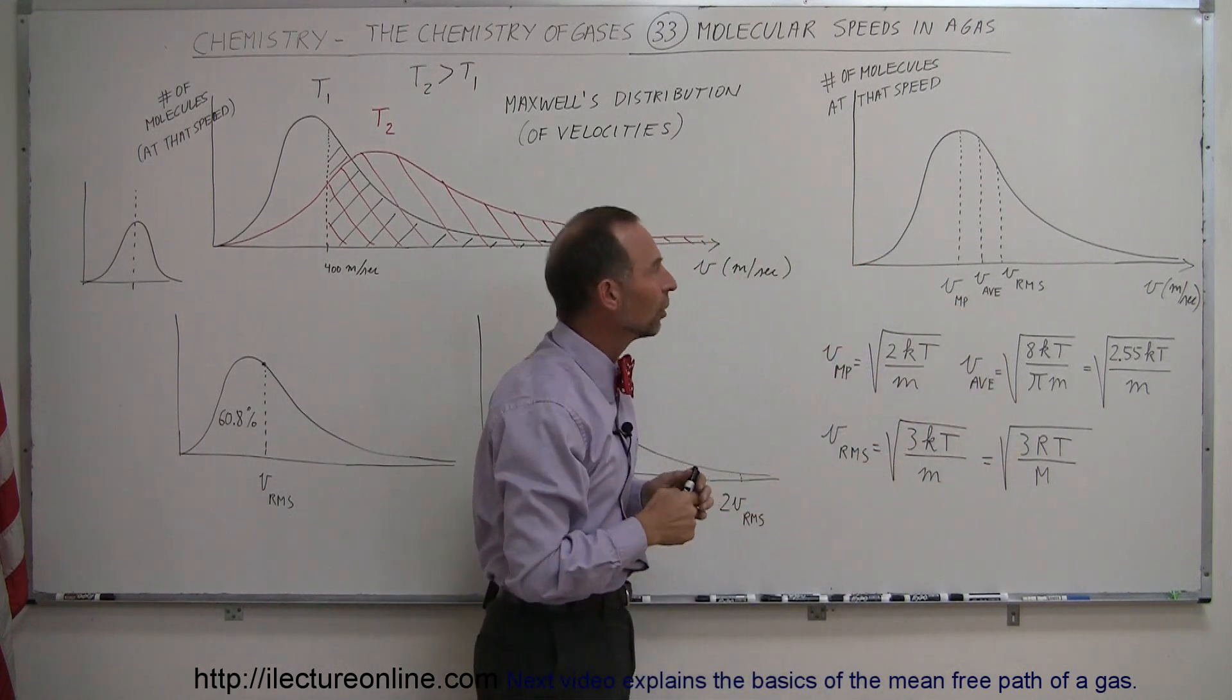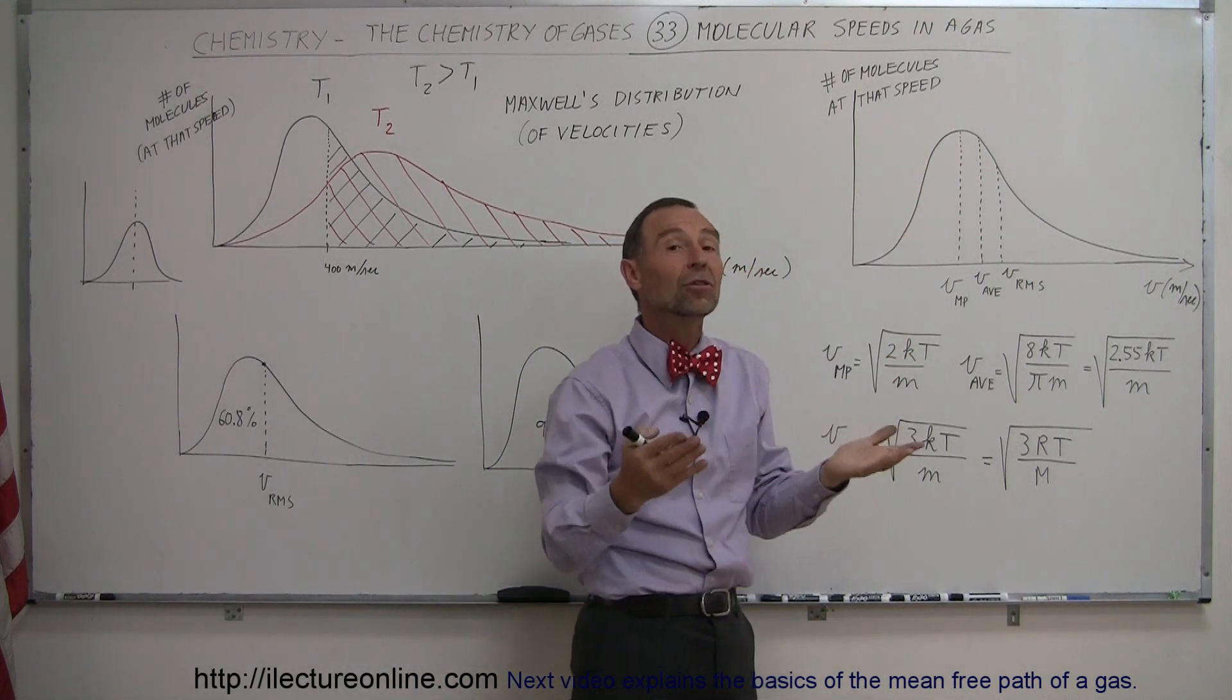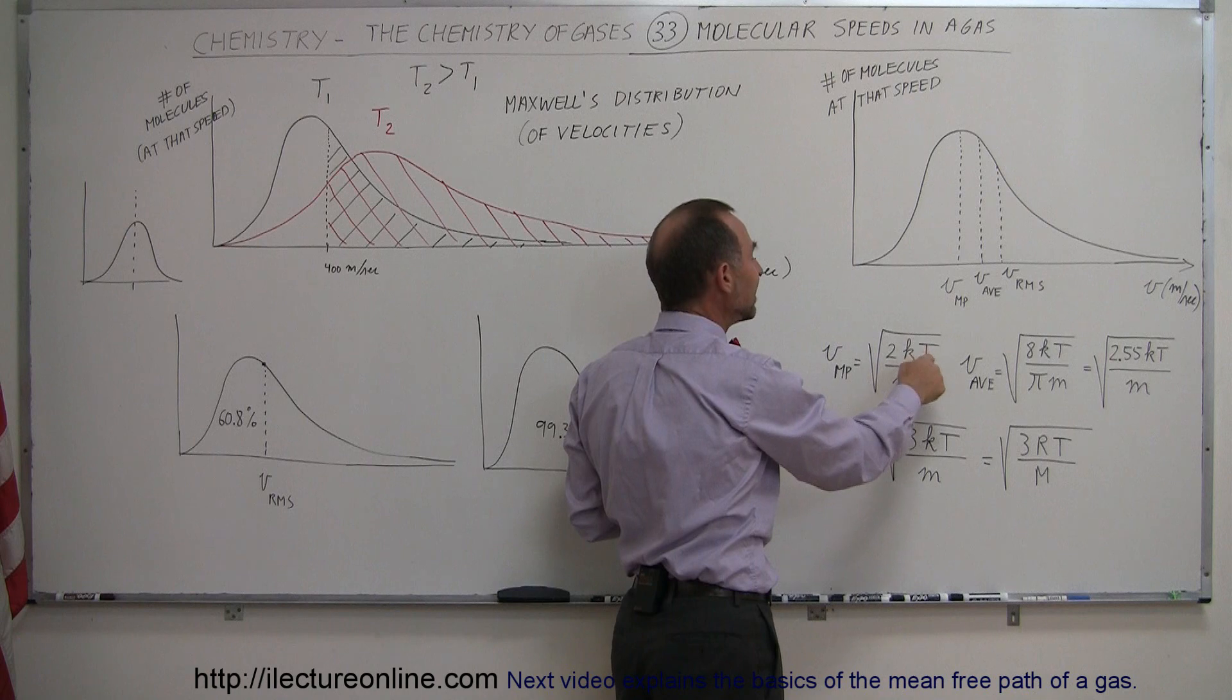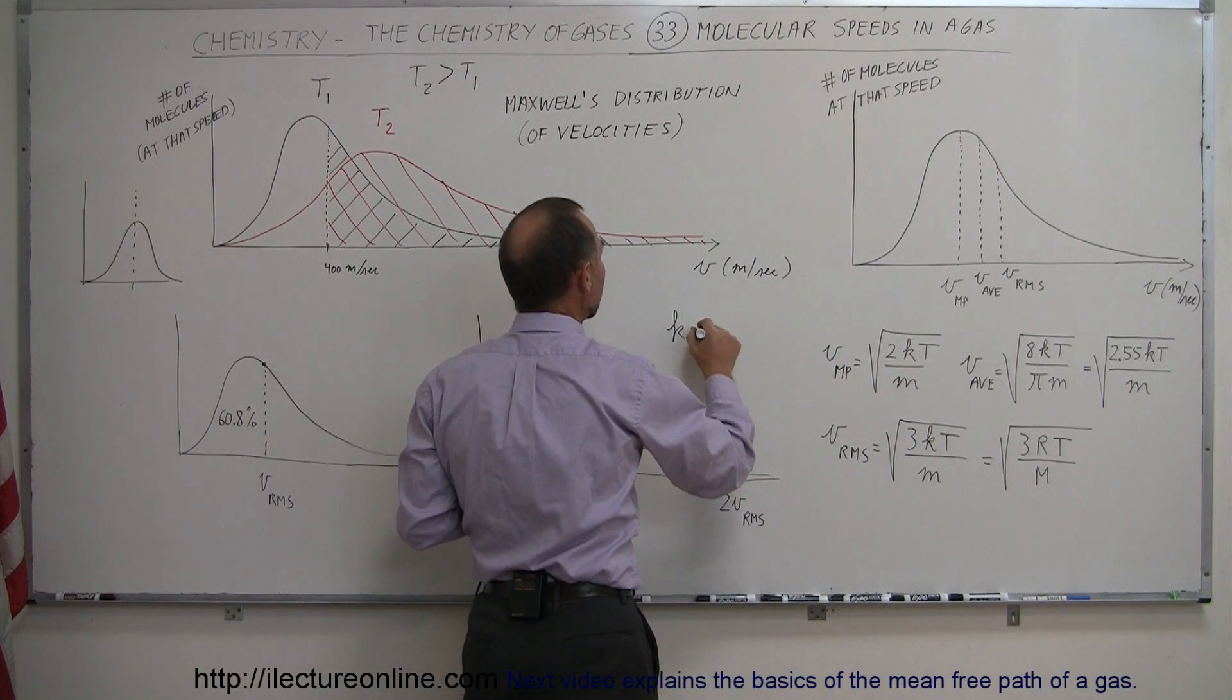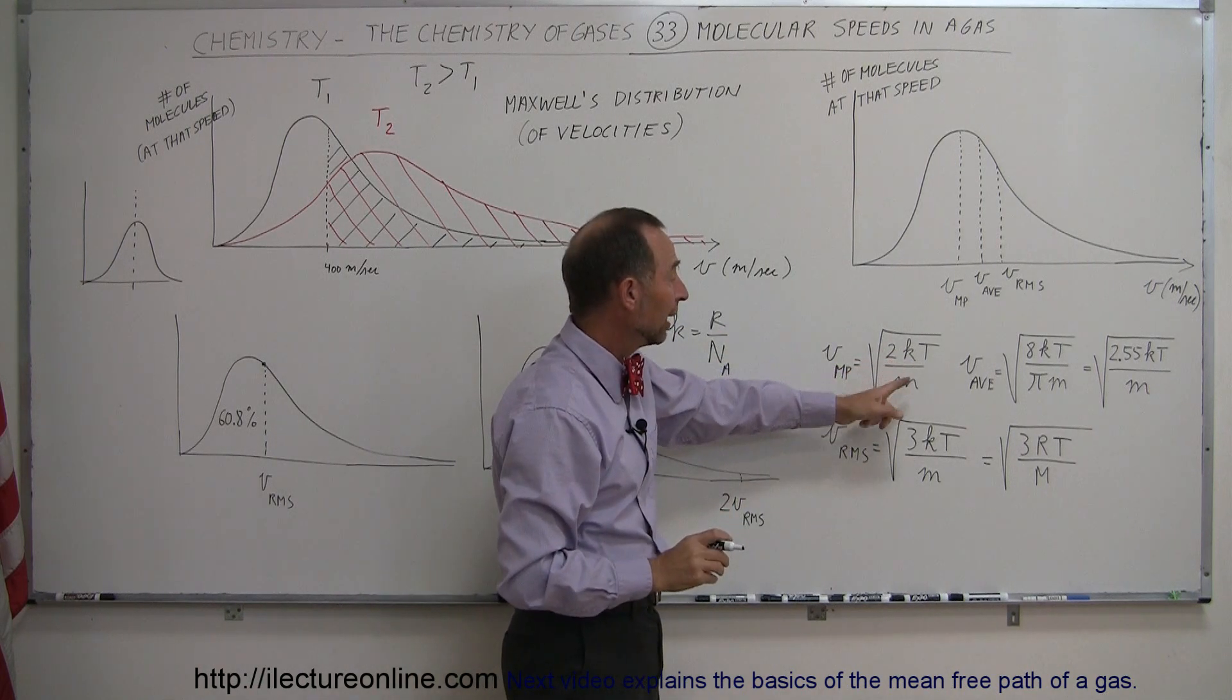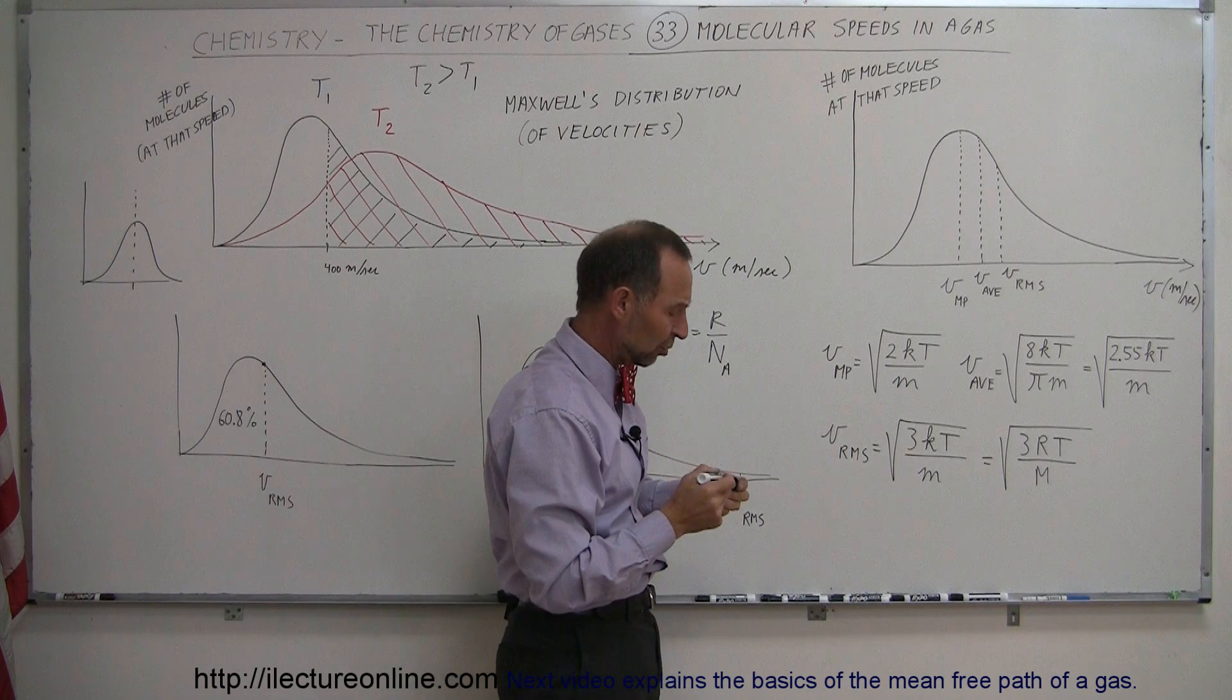MP stands for most probable. So of all the molecules, the greatest number will travel at that speed than at any other speed, and so therefore that's called the most probable velocity. That velocity is calculated by taking the square root of 2KT over M. K is the gas constant divided by Avogadro's number. Now it turns out we can replace the K by R and the M by the molar mass, and then we have it in terms of the gas constant and the molar mass and you get the exact same result.